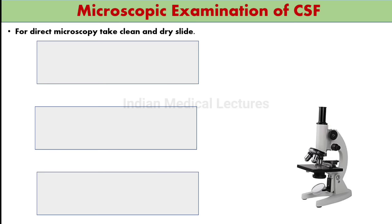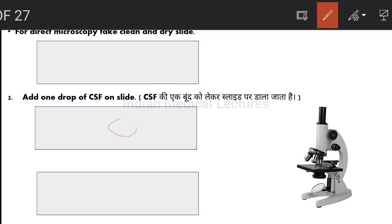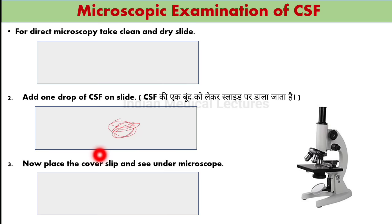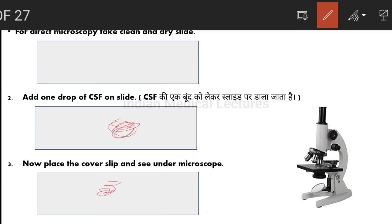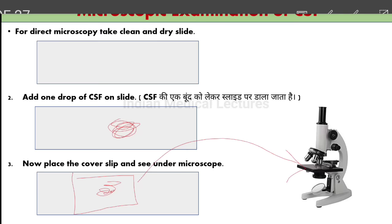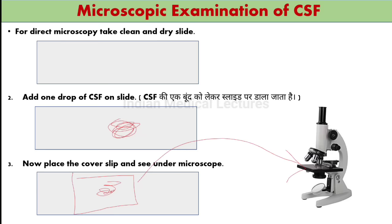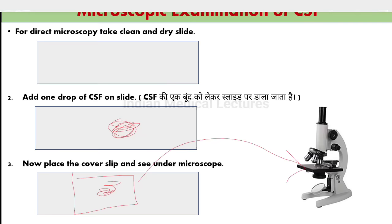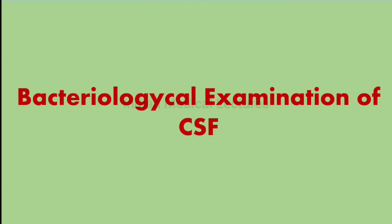Now, how do we perform microscopic examination? First, take a clean and dry slide. Add one drop of CSF onto the slide. Then place a coverslip on top. Put it in the microscope and examine it directly under the microscope — this is called Direct Microscopic examination. Various cells will be visible. Next, we also perform bacteriological examination.